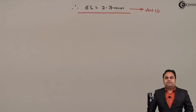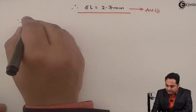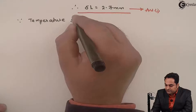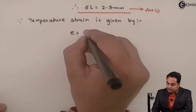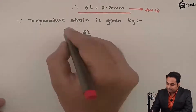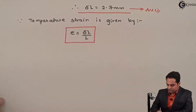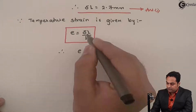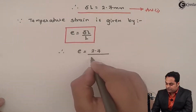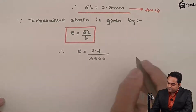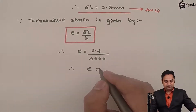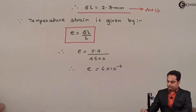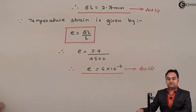Now after getting the free expansion, the next question is to calculate the thermal strain. Temperature strain is given by: strain = change in length / original length. Therefore strain = 2.7 mm / 4500 mm. The value of thermal strain is 6×10⁻⁴. This is the second answer.